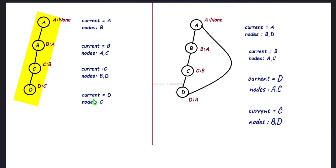Remove node d from the queue and check its adjacent node, which is c. Check whether it is already visited — c is already visited. Then check whether c is the parent node of d — yes. So we didn't get any node which is already visited and is not the parent of the current node. We can print the message: cycle is not detected in this graph.